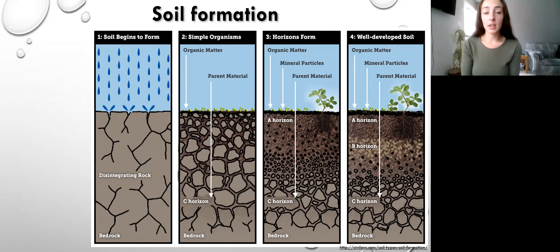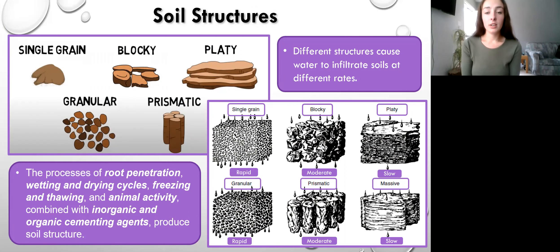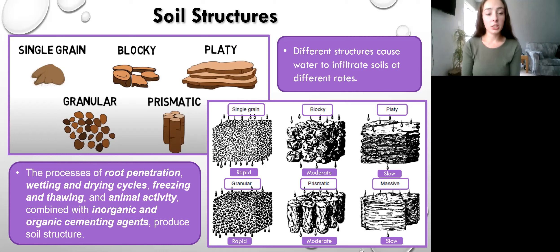Now we'll talk about soil structures. There are different ways in which the material of soil can clump together to form different shapes and morphologies, forming structures such as single-grain, blocky, granular, prismatic, or platy. How these structures form is a combination of root penetration, wetting-drying cycles, freezing and thawing cycles, animal activity, and inorganic and organic cementing agents, which work together in different ratios to produce different soil structures depending on the environment, climate, and what's available. The different soil structures can cause water to infiltrate the soil at different rates, which is important for nutrient transport and storage in the soil, rather than leaching — because if nutrients leach out through water movement and chemical weathering, then the plants won't have those nutrients.